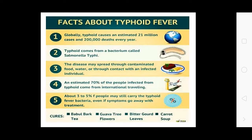Facts about typhoid: globally, typhoid causes 21 million cases and 200,000 deaths every year. Typhoid comes from Salmonella bacteria and spreads through contaminated food and water, and contact with infected persons. About 75% of people are infected through international travel, and about 3–5% of people may still carry typhoid bacteria even after completing treatment. This completes the topic of typhoid fever. Thank you everyone.